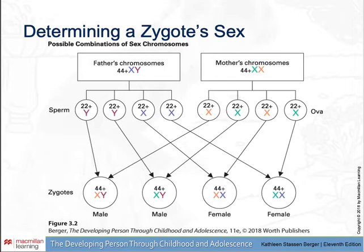The SRY gene not only directs the embryo to grow a penis, it also directs hormone production that affects the brain, skeleton, body fat, muscles, and much else from the moment of conception to the last breath in old age, influencing more sex differences than might be expected from an extremely small portion of the genome.